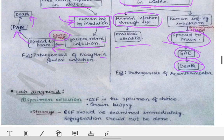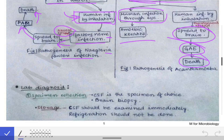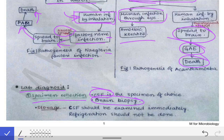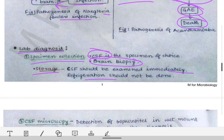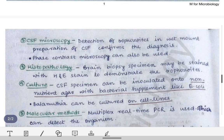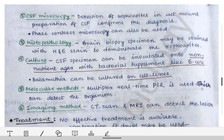For lab diagnosis, we first collect a specimen. The specimen of choice is CSF, since all these free-living amoebas primarily cause brain infections — either encephalitis or meningitis. Brain biopsy can also be taken for diagnosis after death. Storage is very important: examination should be done immediately. Refrigeration is strictly contraindicated for free-living amoeba samples.